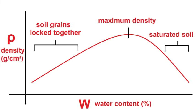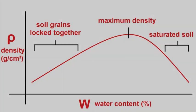If additional water is added, then the soil will become saturated. Since water is relatively incompressible, the overall soil density is reduced. To find these values, we will need to conduct compaction tests, also called Standard and Modified Proctor tests.